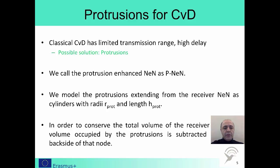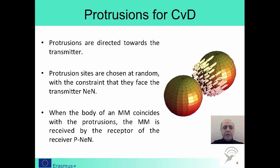In the analysis, we will model protrusions as cylinders for the sake of simplicity. For a fair comparison, we will keep the volumes of the PNAN and the regular NAN equal by subtracting the volume of the protrusions from the backside of the PNAN. The protrusions stick out from random locations on the surface of the receiver faced towards the transmitter. We assume a messenger molecule is received when it touches a protrusion.